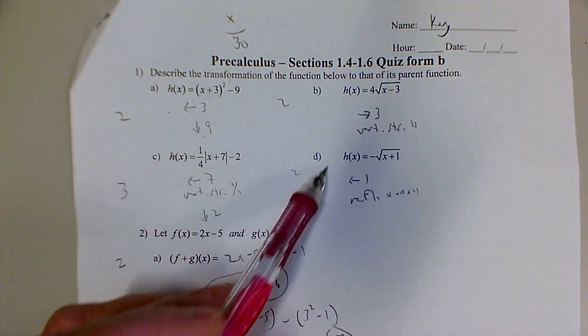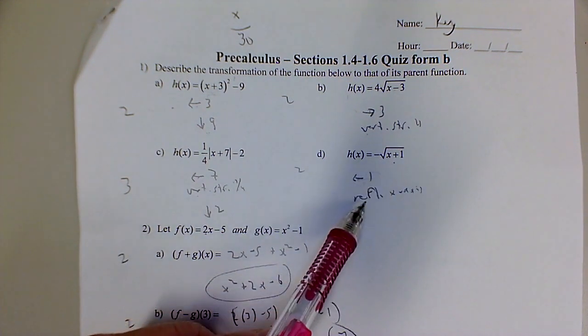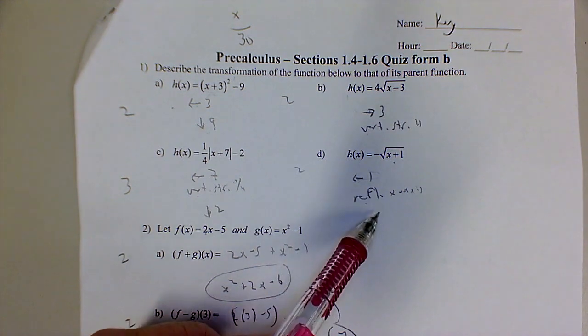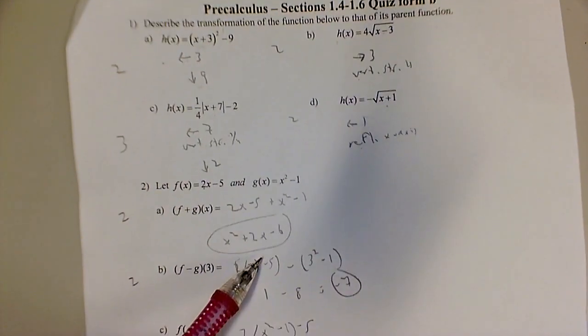You actually need to use these words, right? So then this is left 1, and then reflected on the x-axis. It's not made the opposite, it's actually reflected on the x-axis.